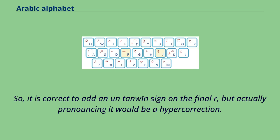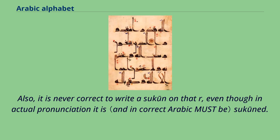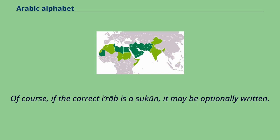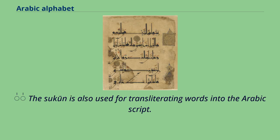So it is correct to add an un-tanween sign on the final letter, but actually pronouncing it would be a hypercorrection. Also, it is never correct to write a sukun on that letter, even though in actual pronunciation it is sukuned. If the correct Arabic form is a sukun, it may be optionally written. The sukun is also used for transliterating words into the Arabic script.